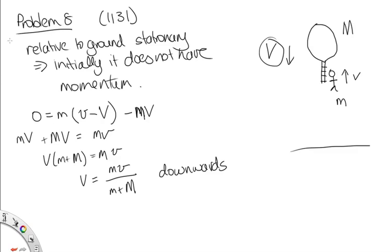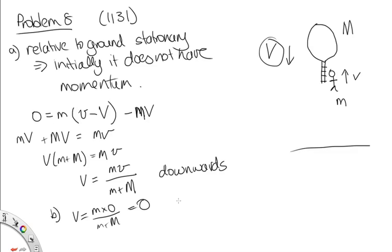Part B asks what the state of movement will be when the man stops moving. When the man is stationary, little v equals 0, so big V equals m times 0 divided by (m + M) = 0. Intuitively, the system initially had no momentum, so total momentum is always zero. If the man isn't moving, neither is the balloon — it's stationary.